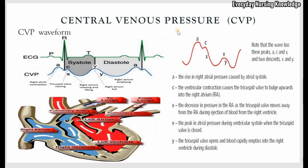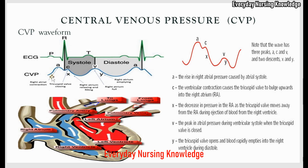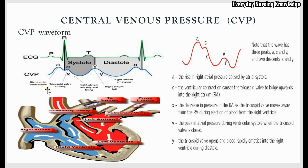Now let's look at the CVP waveform. This is the normal waveform. It has three peaks — A, C, and V — and two descents — X and Y. When the right atrium contracts, the pressure in the right atrium increases, causing the A peak. Comparing to the EKG, it follows the P wave because the P wave represents atrial contraction. So the A peak is caused by right atrium contraction.